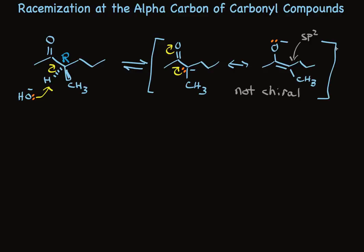Sp2 carbon. So everything is planar. The word for not chiral is achiral. And this has great consequence because when this is not chiral, protonating that with water to go back where we came from can happen from either side equally. So when we picture reprotonation of this anion, we can picture it happening from either side, front or back.